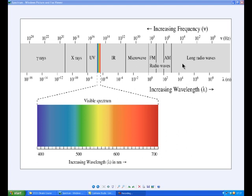So long wavelengths or low frequencies are called radio waves — long radio waves, FM and AM radio. On your car stereo, of course, you have a radio, so that's radio waves. At a slightly higher frequency, we have microwaves. Your microwave oven uses microwaves.